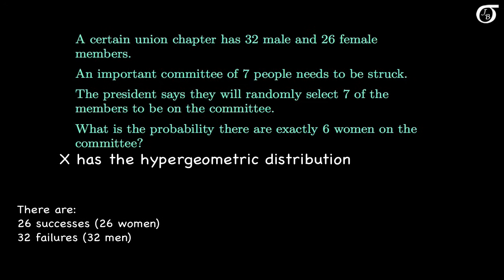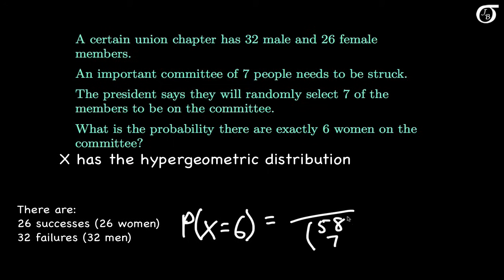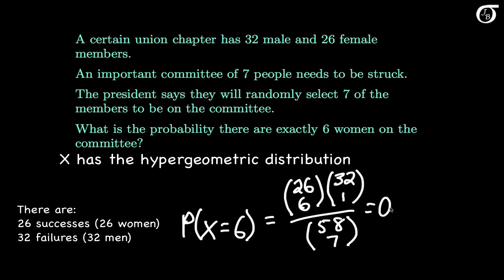When answering these probability questions from the hypergeometric distribution, I strongly recommend just thinking it through rather than relying on the formula — it's easier that way for most people. We want the probability x equals 6. The denominator is the number of possible committees: 58 choose 7. In the numerator we need the number of ways of getting exactly 6 women and 1 man: 26 choose 6, times 32 choose 1. Using a calculator, that works out to 0.0245 when rounded to 4 decimal places.